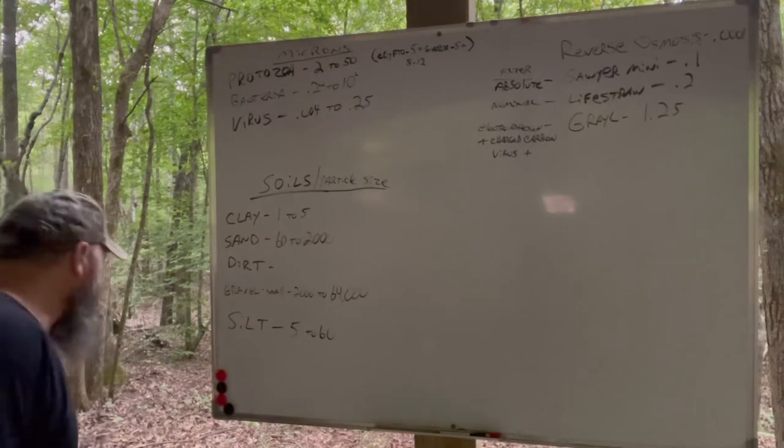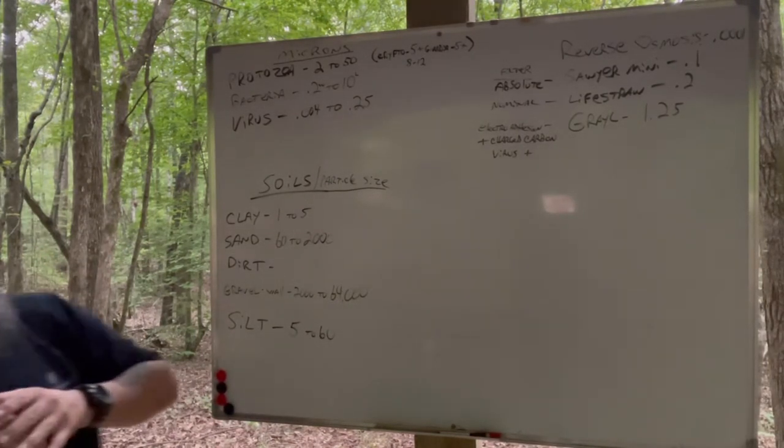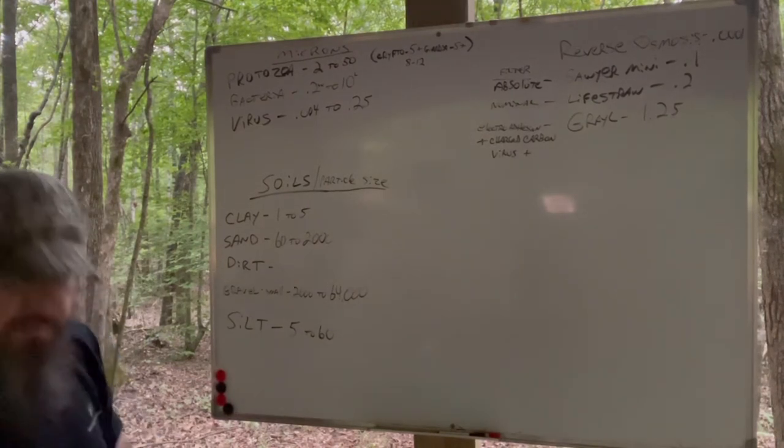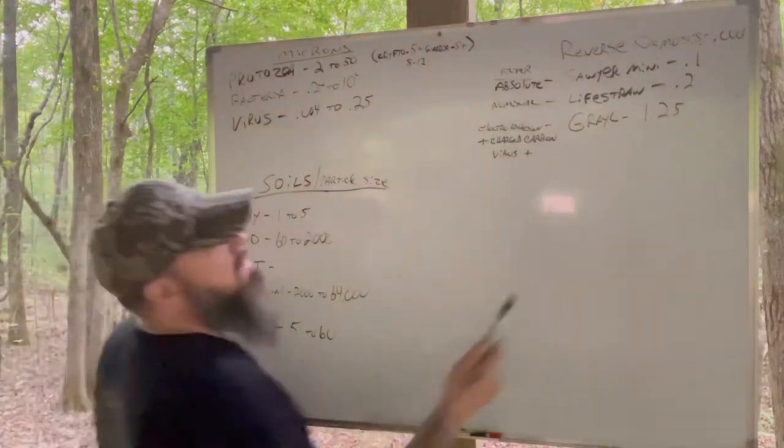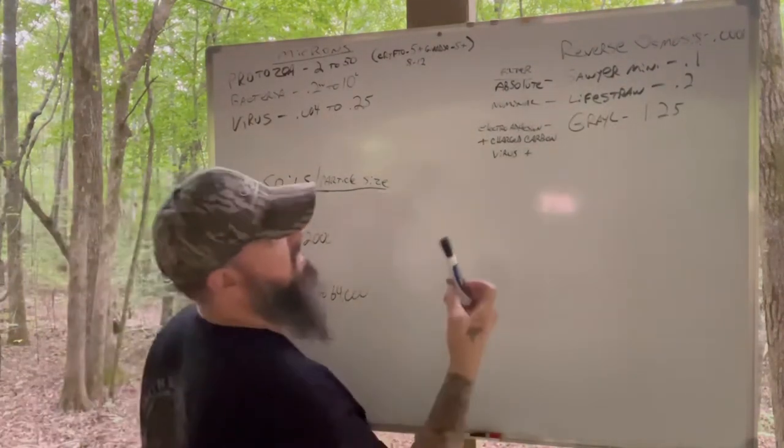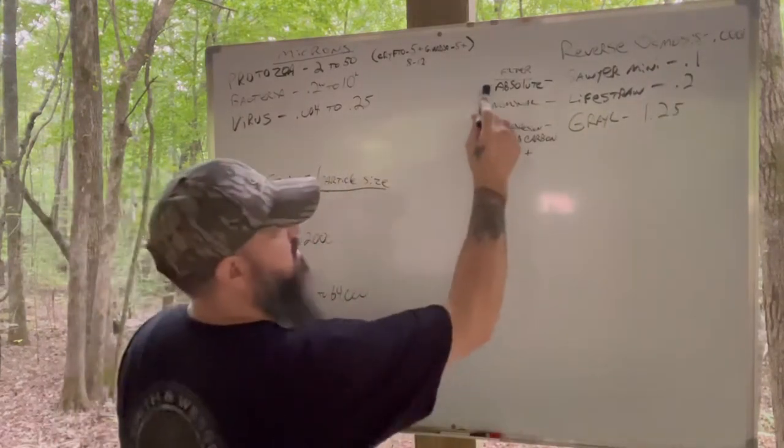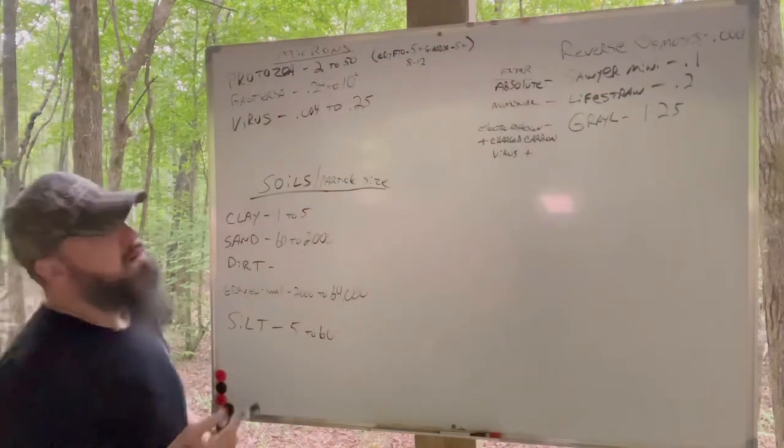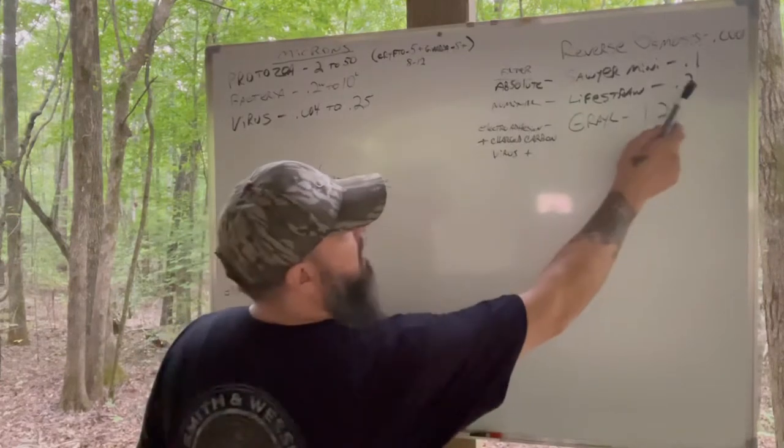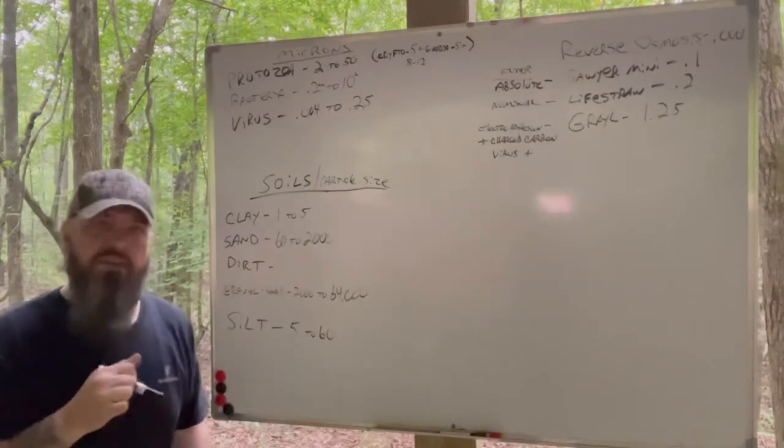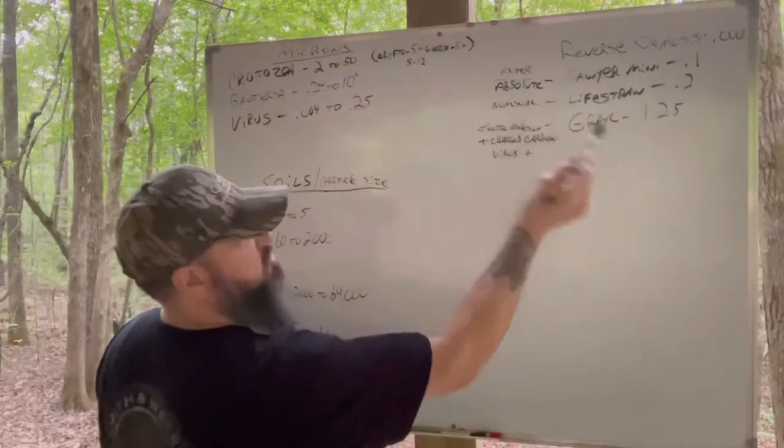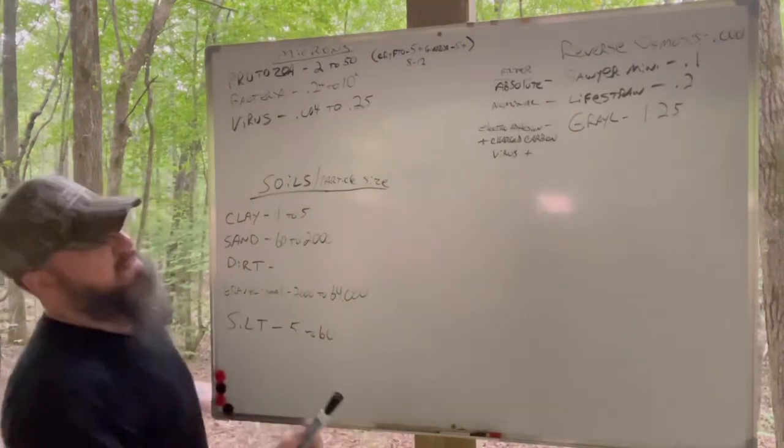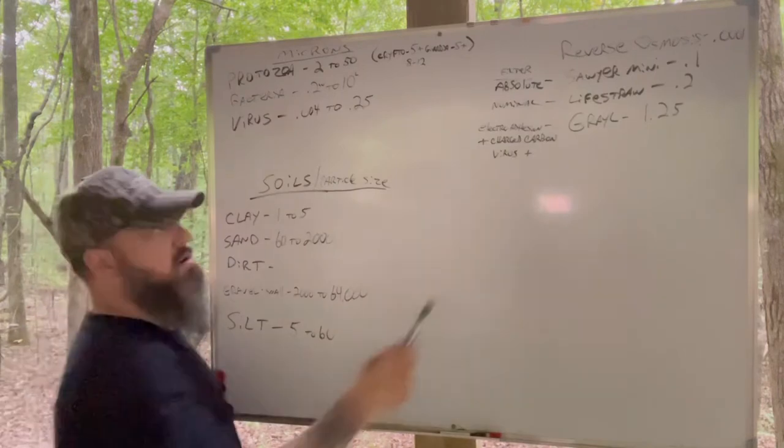Now let's talk about some of our common water filters that are on the market. Let's start with the Sawyer Mini. The Sawyer Mini is a 0.1 micron filter rating. It is an absolute filter rating. That means that no pore in that filter is larger than 0.1 micron. Next we have LifeStraw. It is a 0.2 micron filter rating, but it is a nominal filter rating, meaning there are pores in this filter down to 0.2, but some pores may be larger than 0.2.